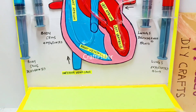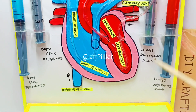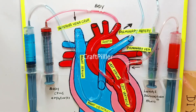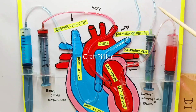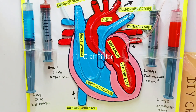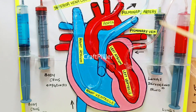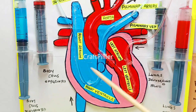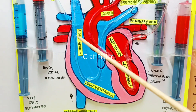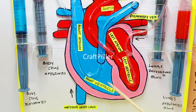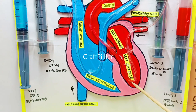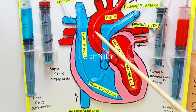Hello friends, welcome back. In this video I will be explaining all about the heart working model by making use of syringes. I'll be explaining what the heart model is all about. We have four chambers in the heart model: right atrium, right ventricle, left atrium, and left ventricle.